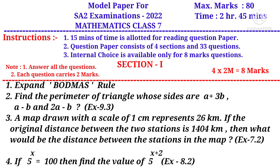Number 3: A map is drawn with a scale of 1 cm representing 26 km. If the original distance between 2 stations is 1,404 km, then what would be the distance between the stations on the map? It is a question from the 7th chapter, Ratio and Proportion. Number 4: If 5 power X is equal to 100, then find the value of 5 power X plus 2. It is a question from the chapter Exponents and Powers.